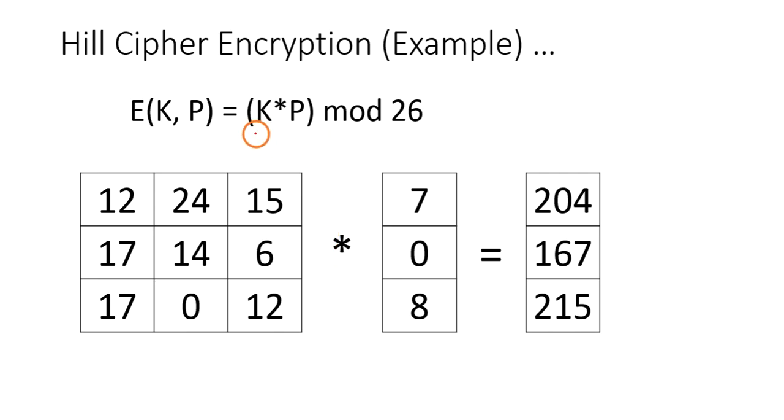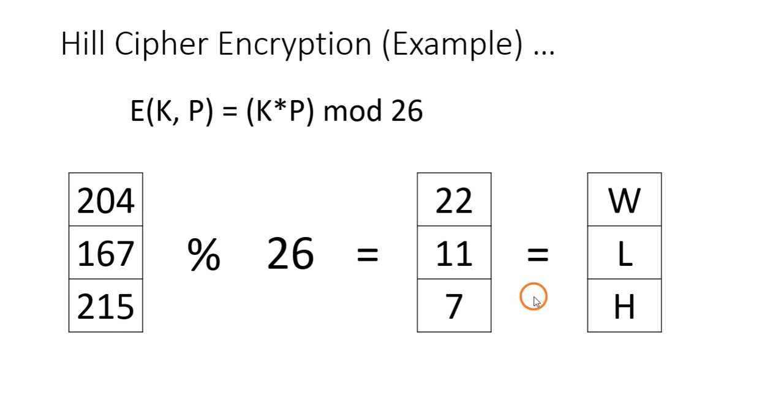Now we are performing the formula, that is key matrix into plaintext vector. Simple matrix multiplication: 12 into 7 plus 24 into 0 plus 15 into 8 gives 204. Similarly, 17 into 7 plus 14 into 0 plus 6 into 8 gives 167. And finally, 17 into 7 plus 0 into 0 plus 12 into 8 gives 215.